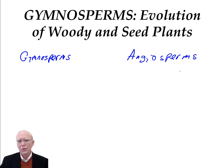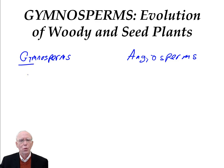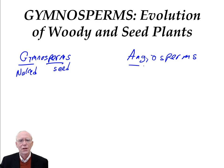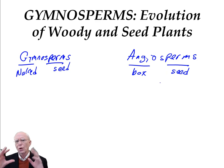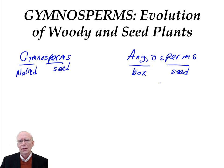There are a number of other names for the angiosperms, but we're going to use that name because it's so descriptive. What do these words mean? 'Gym' means naked, and 'sperm' means seed. So the gymnosperms are the naked-seeded plants. 'Angio' means box, and 'sperm' means seed. So these are the plants which have some kind of a box or enclosure around their seeds.